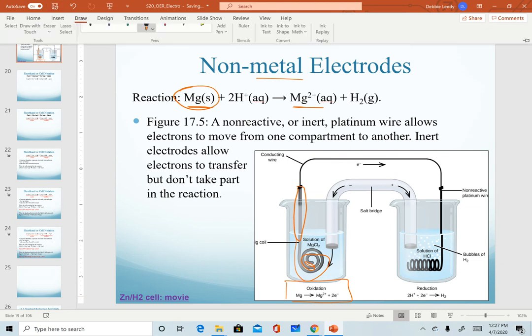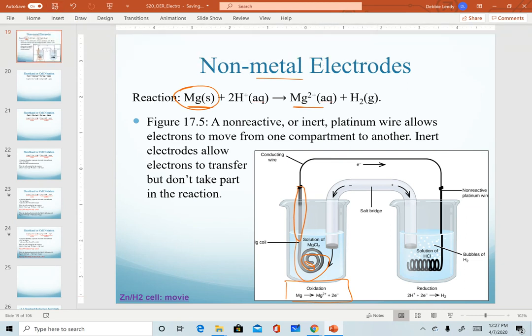Notice the other reaction is hydrogen. Hydrogen ions being reduced down to hydrogen gas. There is no solid, much less no metal in here, to attach a wire to. And so notice on our right hand compartment, in this one our source of hydrogen ions is a hydrochloric acid solution. So we have H plus floating around in solution. That is getting reduced down to bubbles of hydrogen gas.